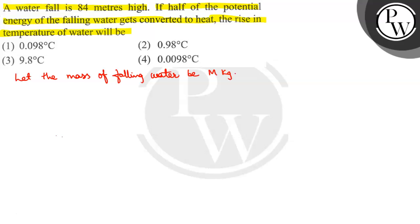So, potential energy is mgh. m into g is 9.8, into h is 84. So 9.8 meter per second square into 84. This value will be 823.2, 823.2 m Joule. This is Joule now, 823.2 m Joule.